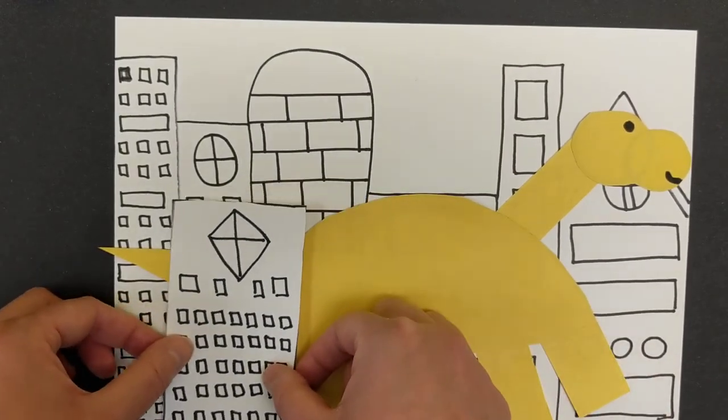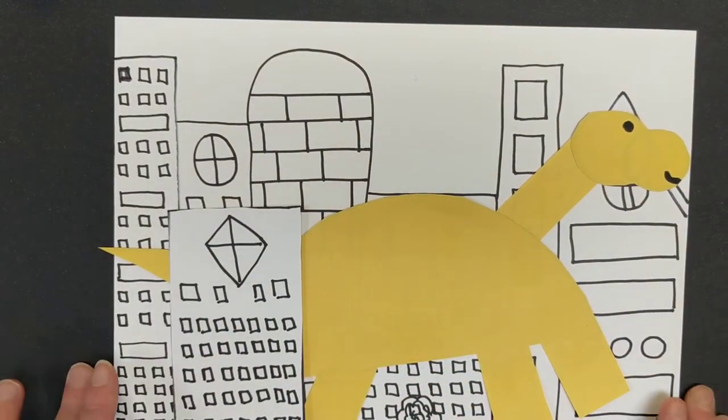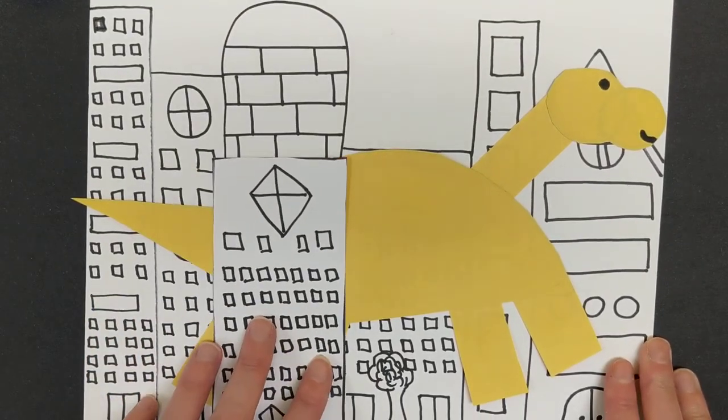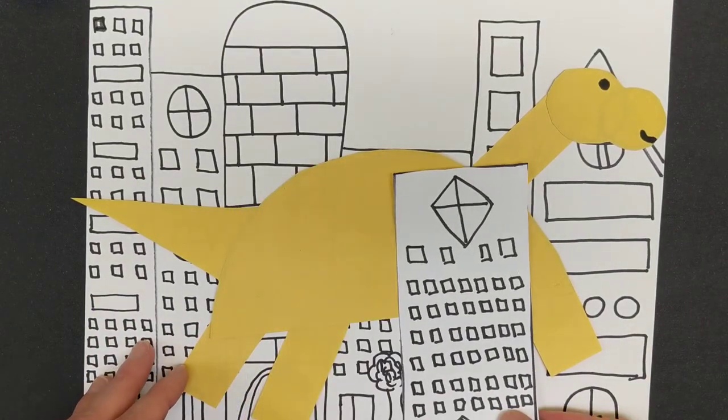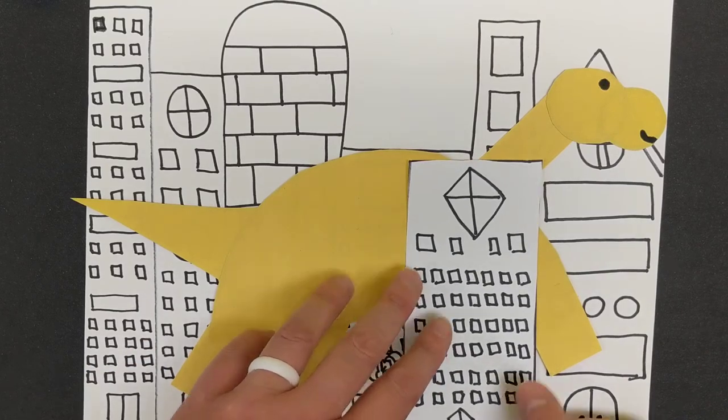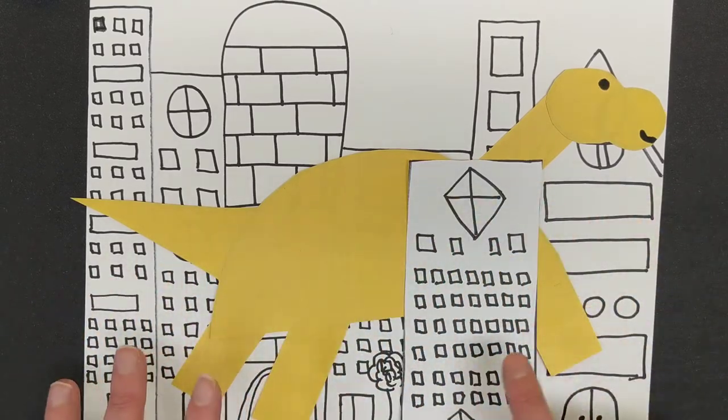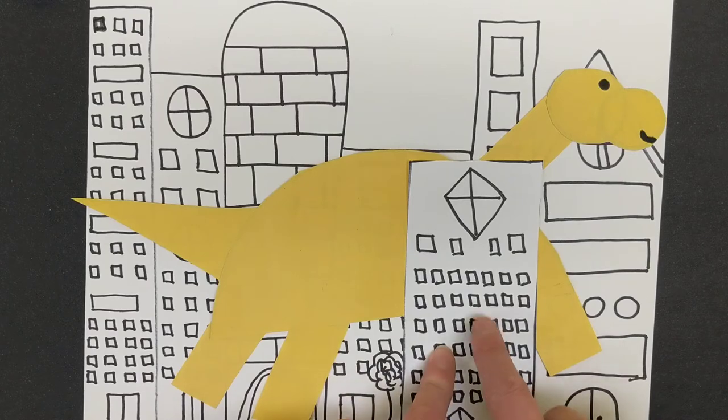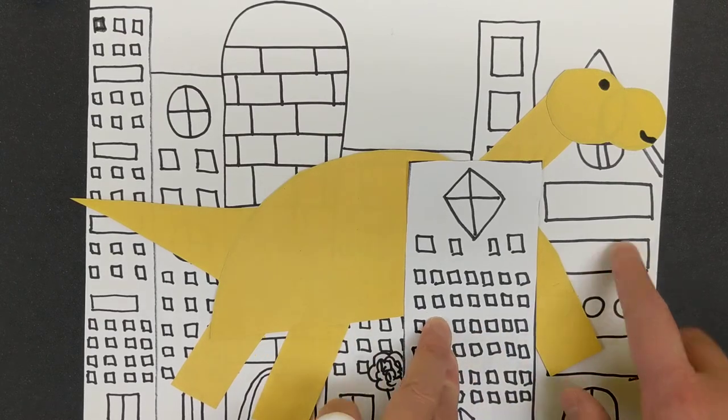Again, you'll have to cut it out, but I like the idea of us kind of layering. Because if we're in a city, we can definitely see that there are different streets. So we're pretending that our dinosaur is walking behind this building and in front of this building.